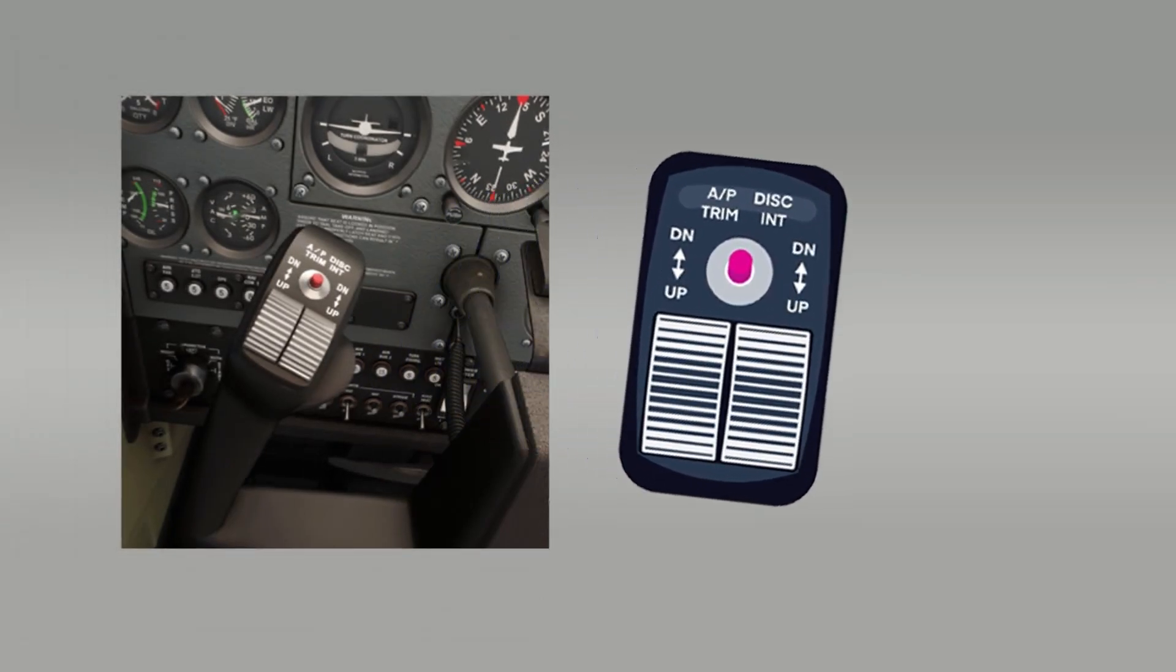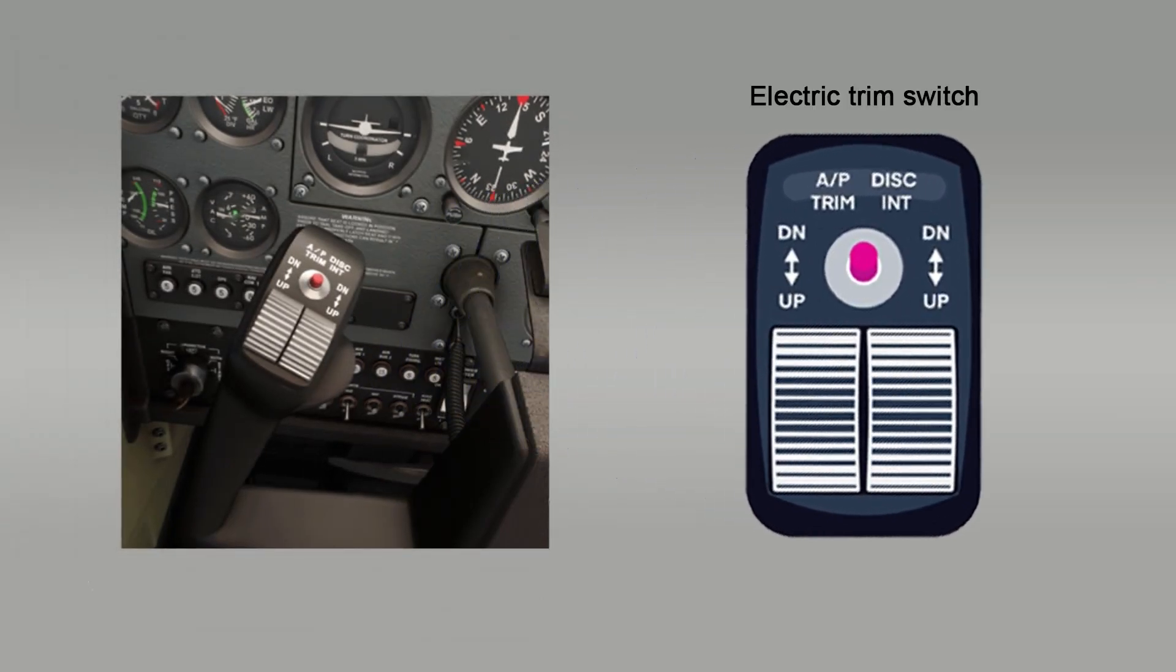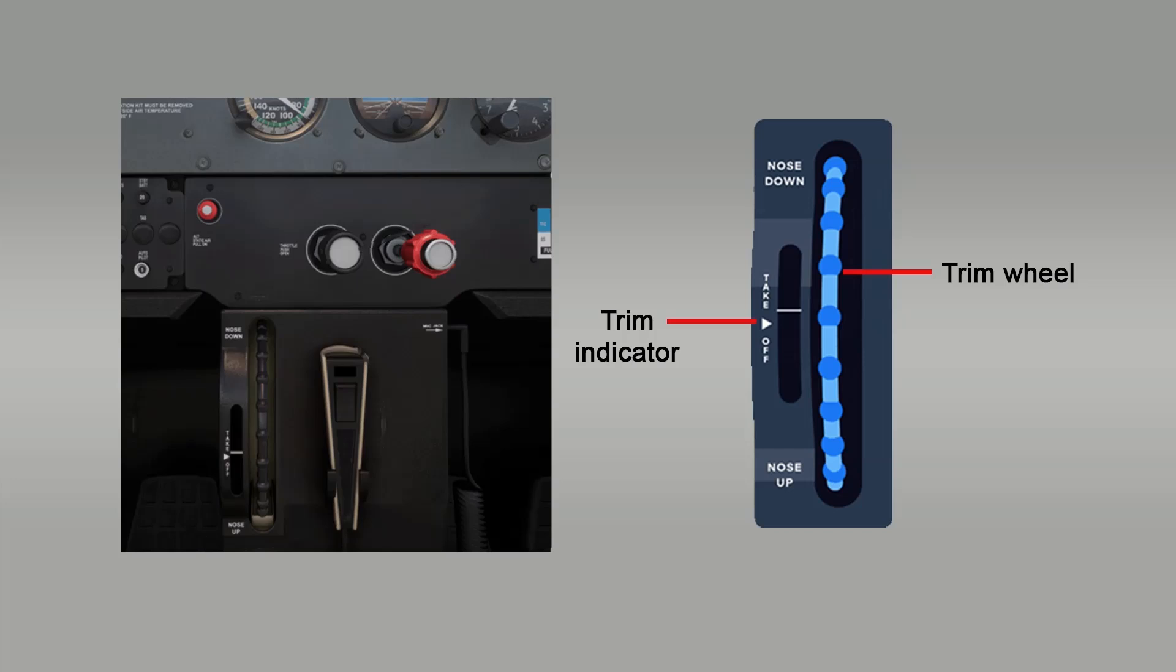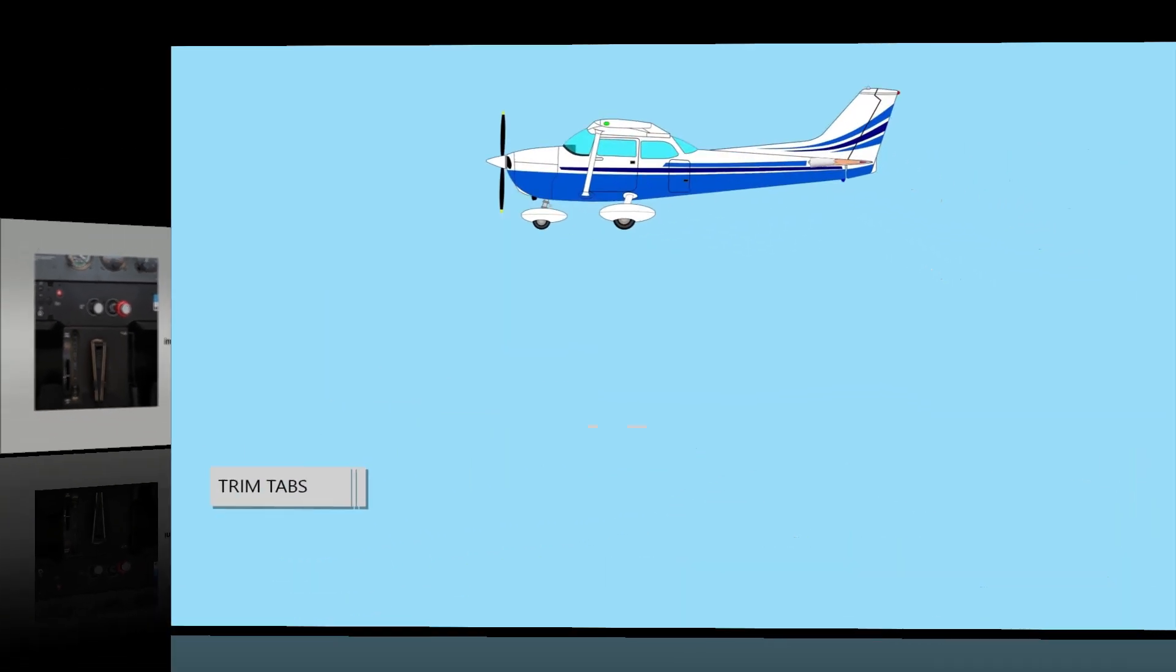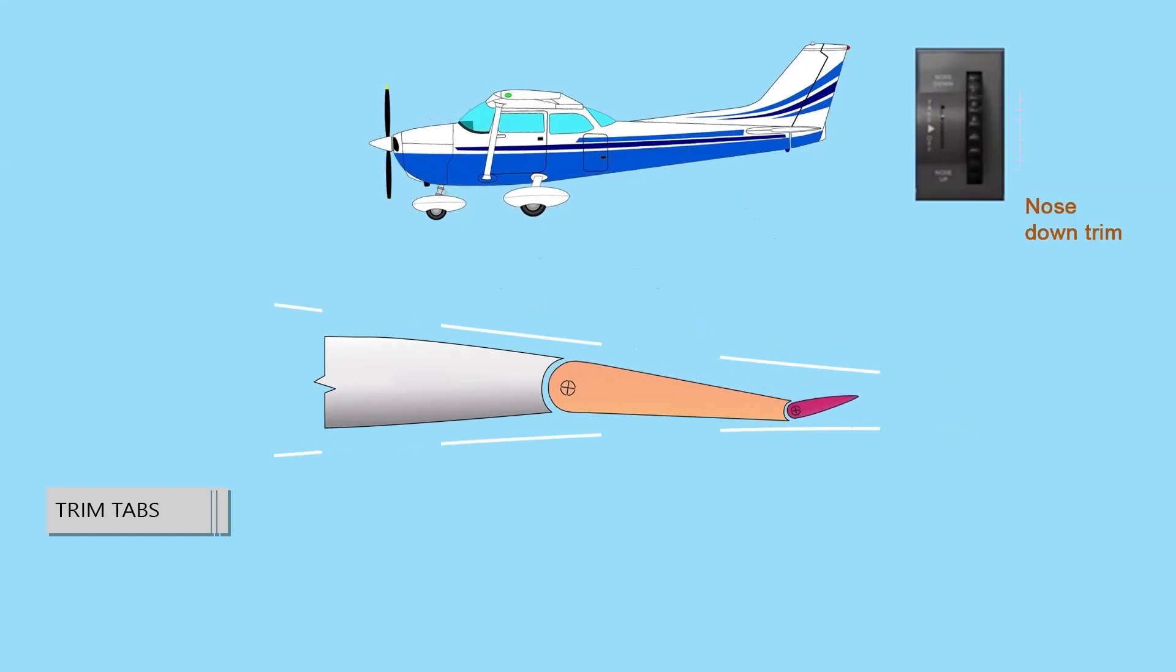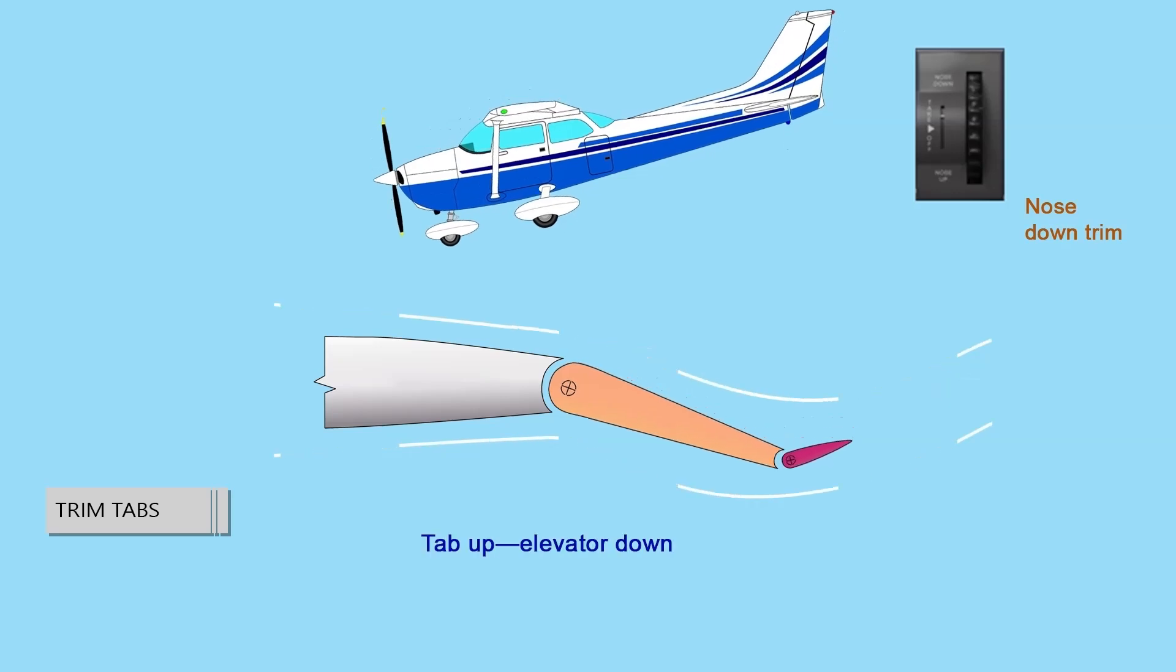Most trim tabs are manually operated by a small, vertically-mounted control wheel. However, a trim crank may be found in some aircraft. The flight deck control includes a trim tab position indicator. Placing the trim control in the full nose-down position moves the trim tab to its full-up position. With the trim tab up and into the air stream, the airflow over the horizontal tail surface tends to force the trailing edge of the elevator down. This causes the tail of the aircraft to move up and the nose to move down.